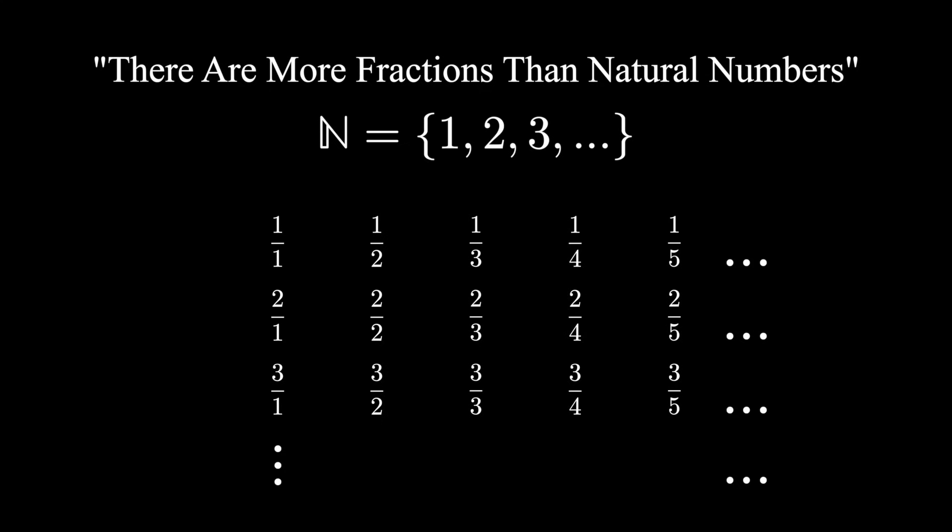A mathematician might look for a bijection between the two sets, essentially looking for a way we can pair up every single element of both sets. If every element from both sets had one partner, then there would be just as many elements in each set, and they would have the same cardinality, the same size.